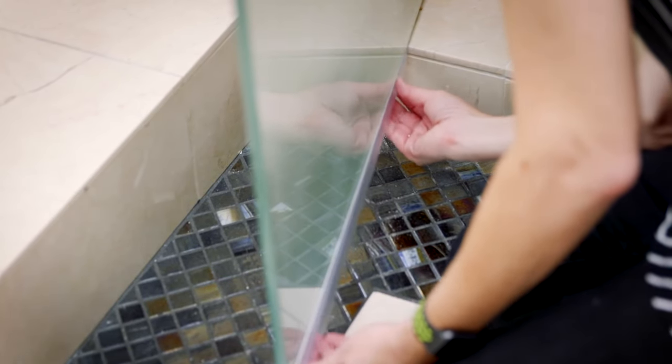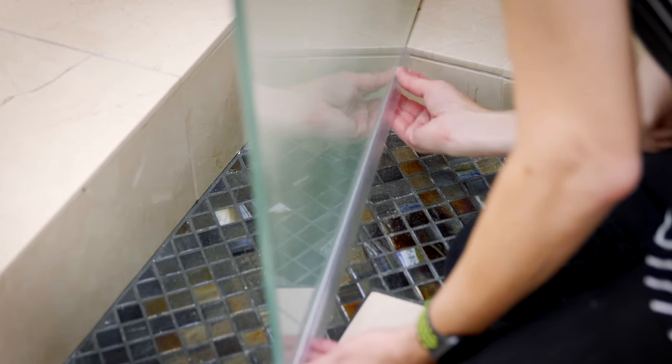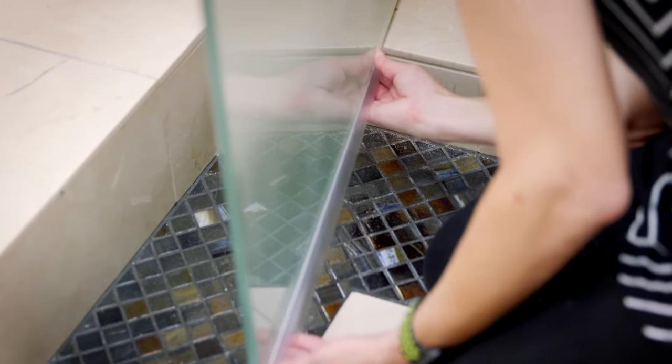Place the bottom sweep onto the bottom of the door panel to check your measurements. You want it to be flush with the strike edge of the door.